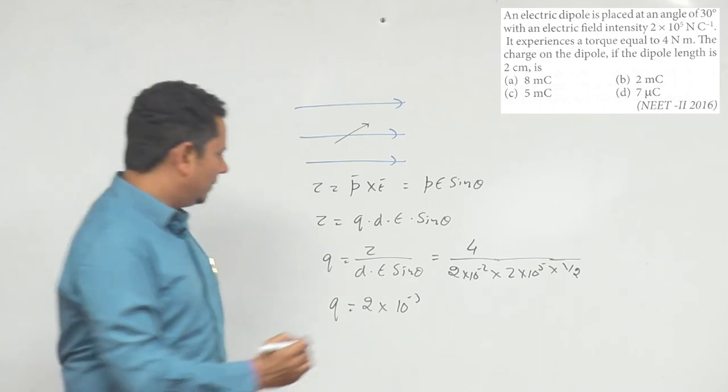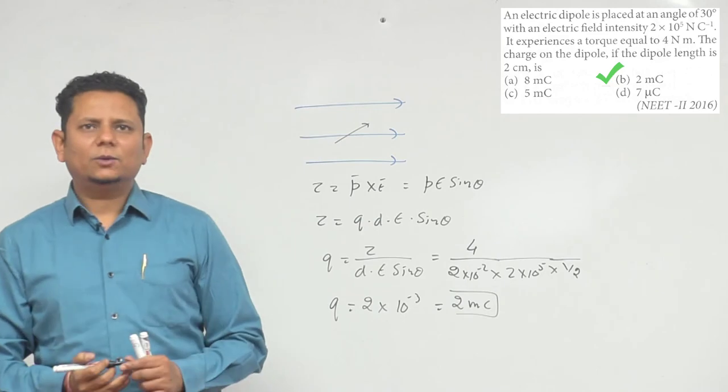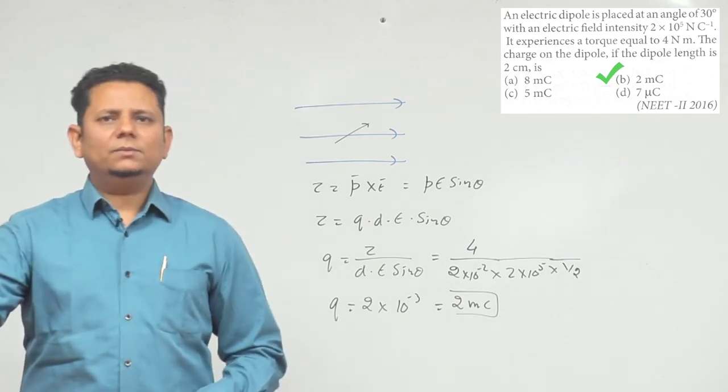So our final answer is 2 millicoulombs. Based on this, we can say that option B, 2 millicoulombs, is the right answer.